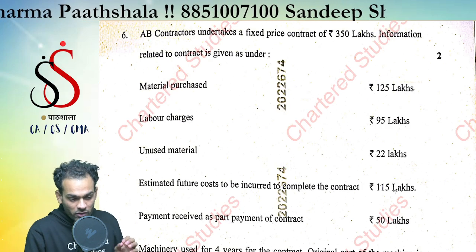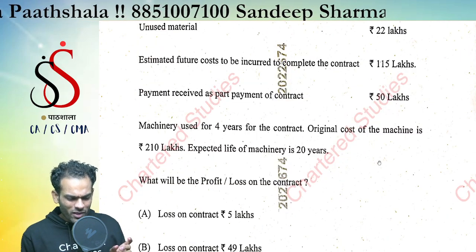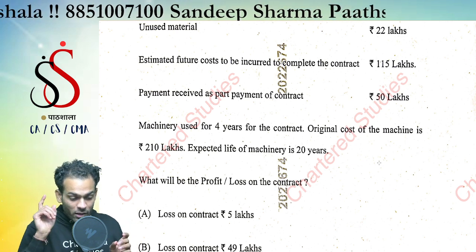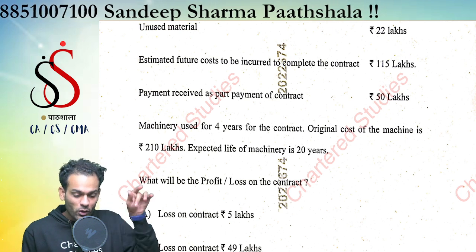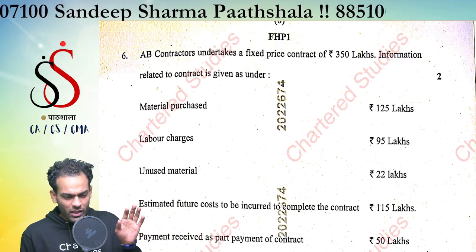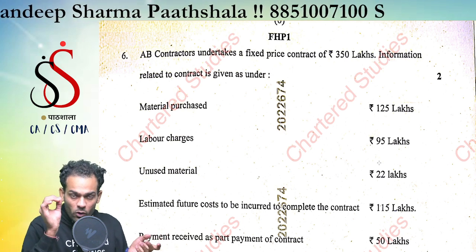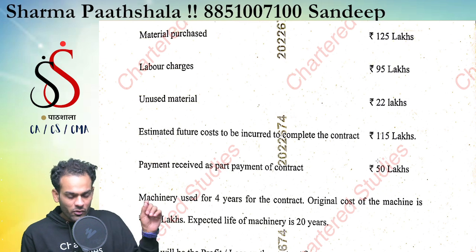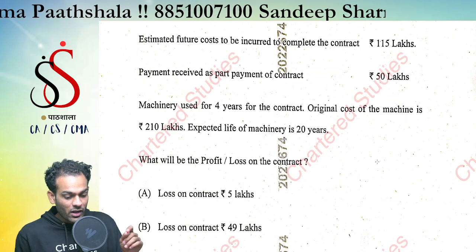Then there is a case study from Accounting Standard 7. Many students would have made the mistake of calculating the proportionate profit or loss — no. The question was asking what will be the total profit or loss on the contract. You have to calculate the total. Take the total revenue of 350 lakh, deduct total cost from it, and you will get your answer. The total cost comes out to be 355 lakh, so the correct answer is 350 revenue minus 355 cost = loss on contract 5 lakh, that is option A.